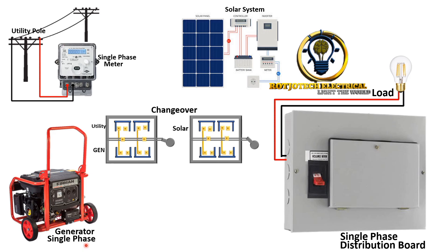What we are going to do first is connect the load side, so that after that we can focus on the utility, solar, and generator connections. We are going to connect both changeover switches together — we loop them together. We loop the live of the first changeover switch with the live of the second, and do the same for neutral. This looped connection serves as our load output.